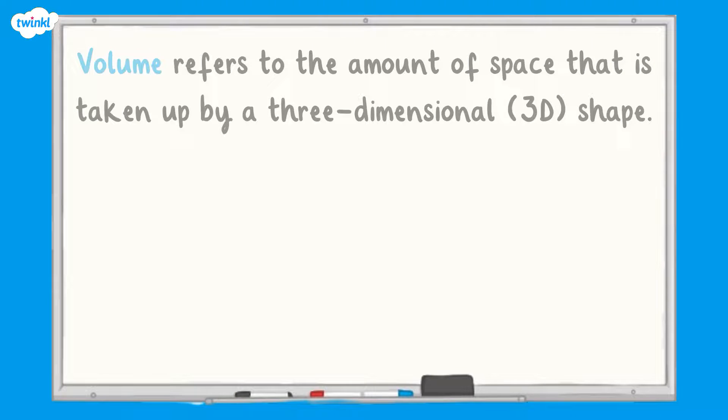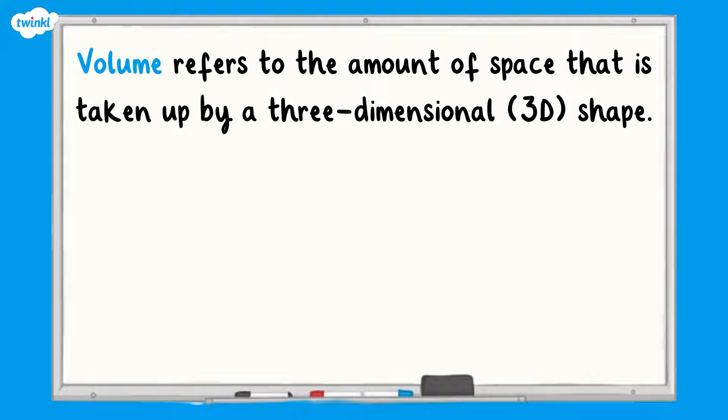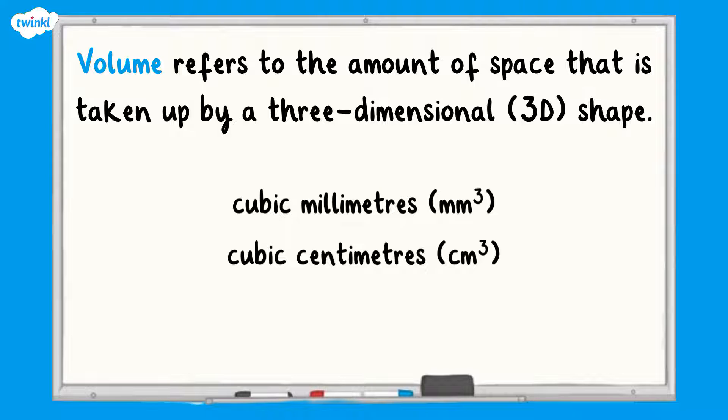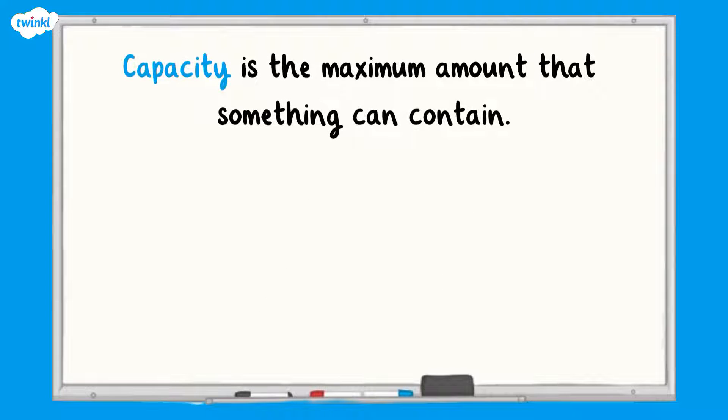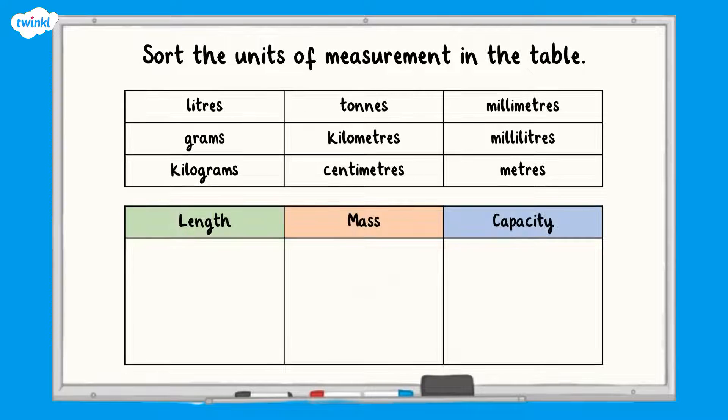The terms volume and capacity can sometimes get mixed up too but there's an easy way to remember the difference. Volume simply refers to the amount of space that is taken up by a three-dimensional shape and is often measured in cubic millimetres, cubic centimetres or cubic metres. Capacity is the maximum amount that something can contain and is often measured in millilitres and litres.